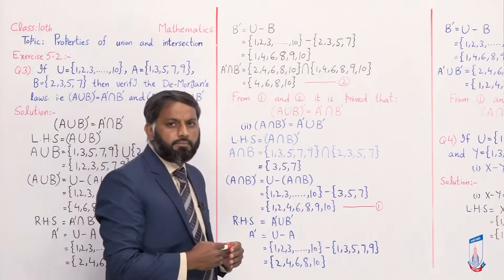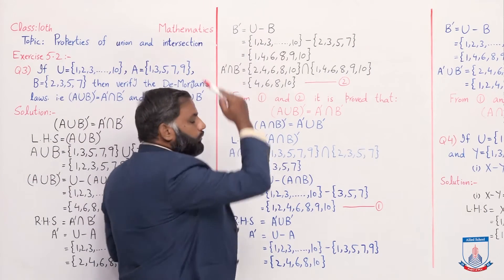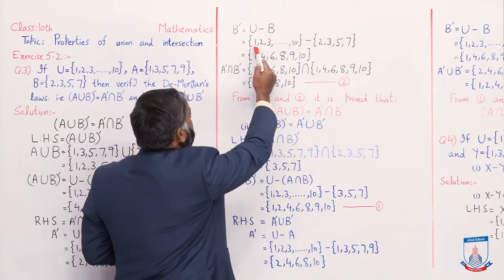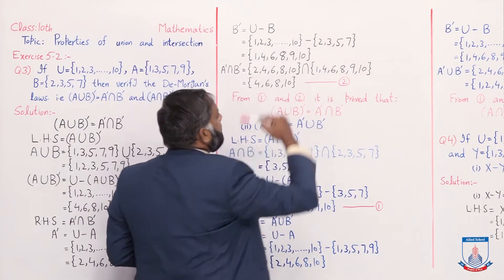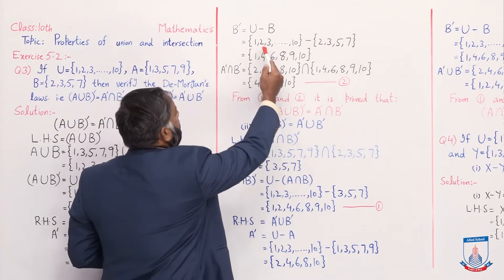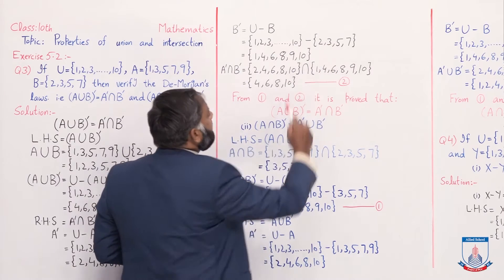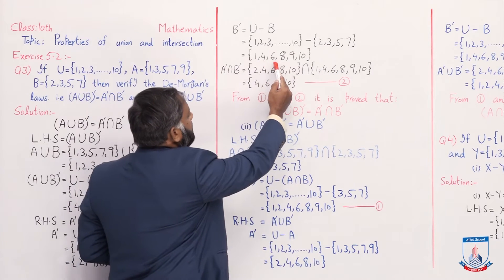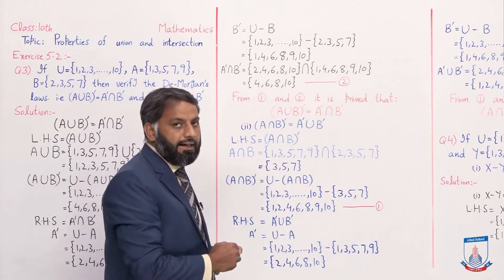B' = U minus B. Universal set is {1, 2, ..., 10}. Set B given in the question is {2, 3, 5, 7}. The elements of the universal set that are not in set B are: {1, 4, 6, 8, 9, 10}.